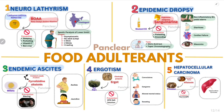Third, endemic ascites: related to millets contaminated with Crotalaria seeds. The toxin is pyrrolizidine alkaloids — it is hepatotoxic, leading to ascites and jaundice. Prevention: by sieving, so the seeds get filtered out.